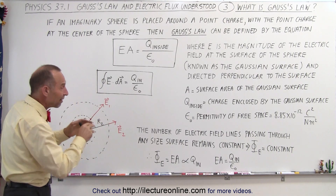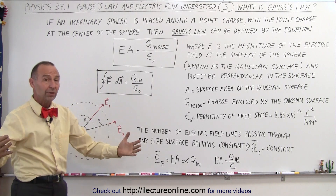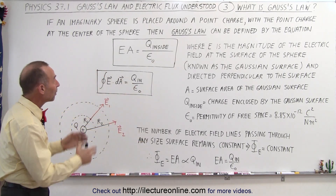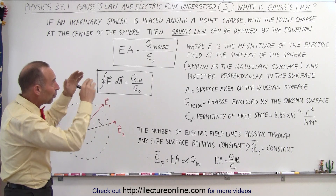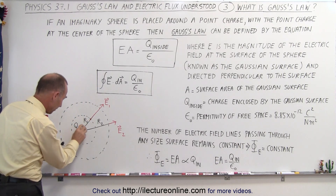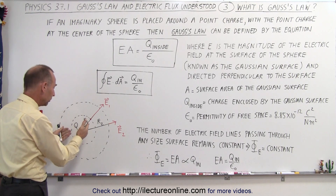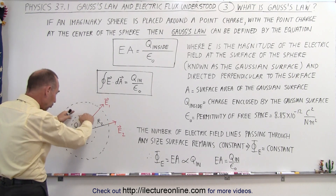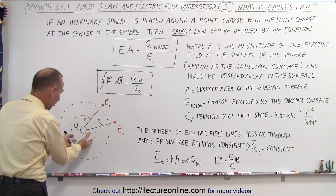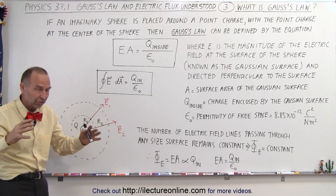If we have an imaginary sphere — not a real sphere, just an imaginary sphere — and we place that imaginary sphere around a point charge right here, a little point charge with some charge on it called Q, and we place an imaginary sphere around it, either with radius R1 or radius R2, it doesn't matter what size sphere.